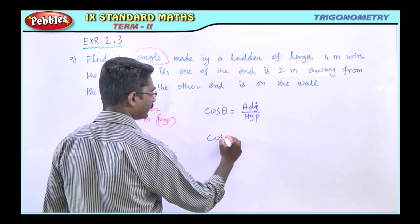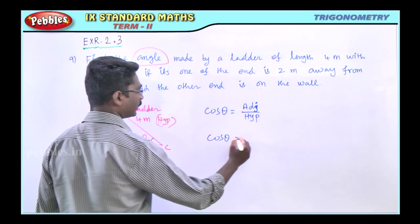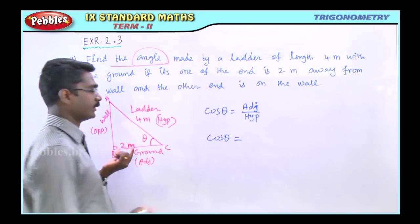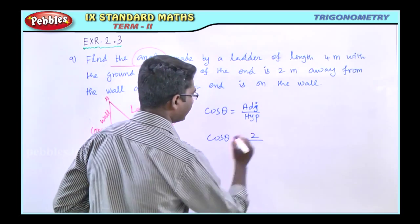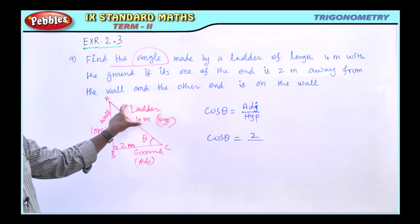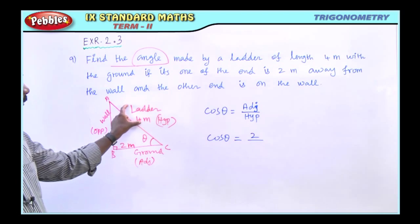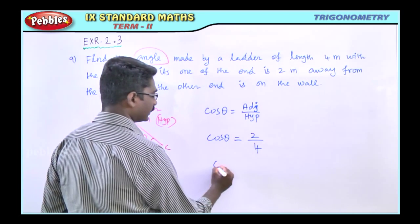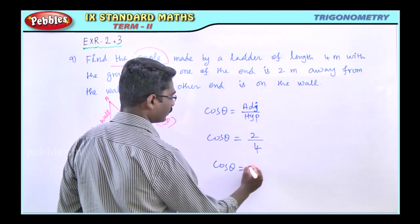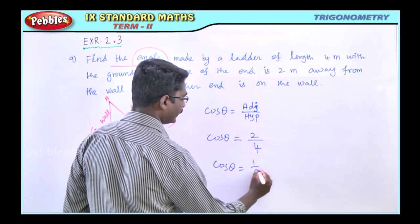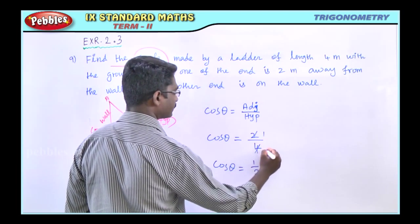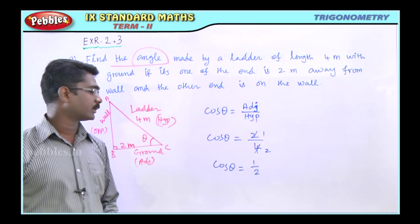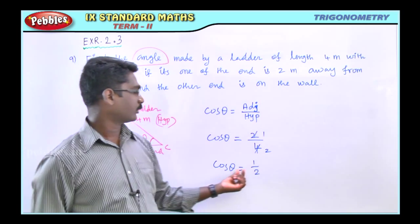Therefore, cos theta equals the adjacent side, which is 2 meters, divided by the hypotenuse side — the length of the ladder — which is 4 meters. So, cos theta equals 2 by 4, which simplifies to 1 by 2. We have a trigonometric table, and cos theta equals 1 by 2.